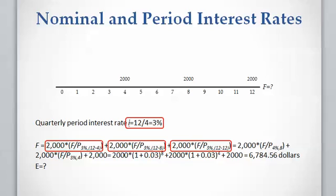For the future value, we again use the period interest rate of 3%. By future value we mean the value at the end of the project lifetime, which is at the end of the third year or the twelfth quarter. To calculate the future value of the first payment, we need to know how many time periods are between the payment time and the future time. The first $2,000 is paid at the fourth quarter, which is eight quarters away from the future time at the twelfth period, so we write 12 minus 4 as the time period in the factor.